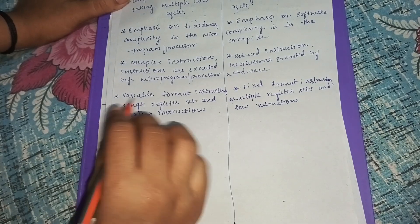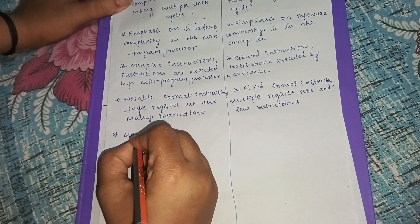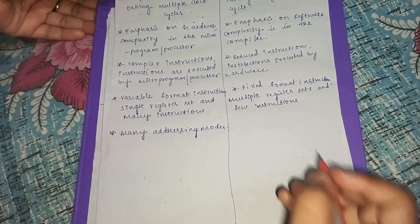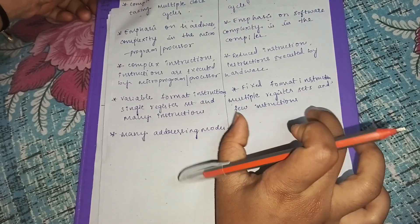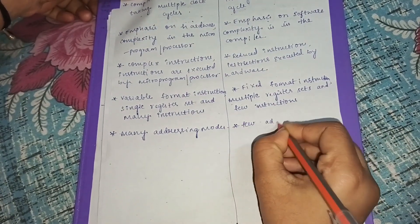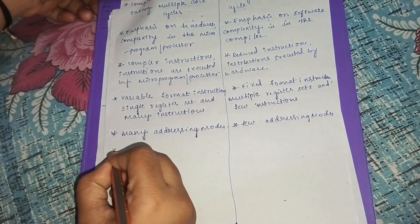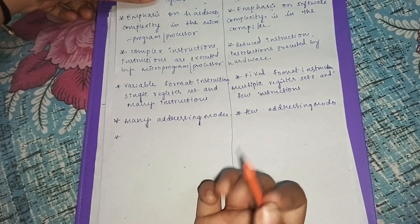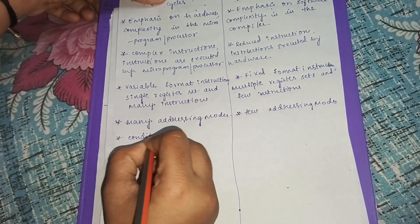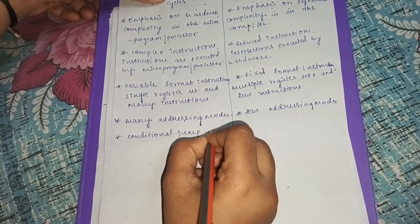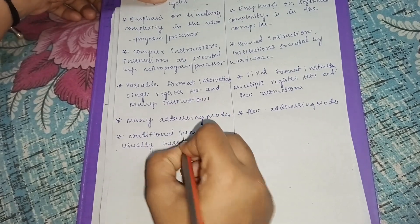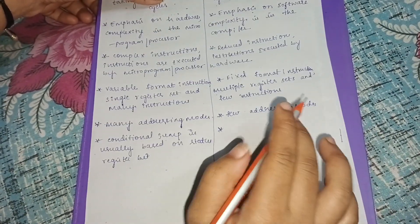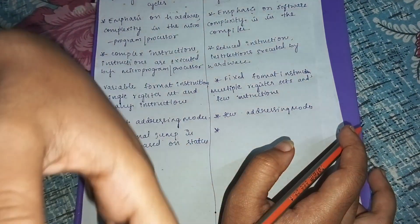Since CISC has many instructions, it also has many addressing modes. Since RISC has fewer instructions, it has fewer addressing modes. For conditional jumps, in CISC it is usually based on status register bits, and in RISC the conditional jump can be based on a bit or anywhere in memory.